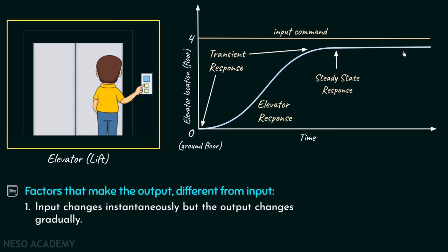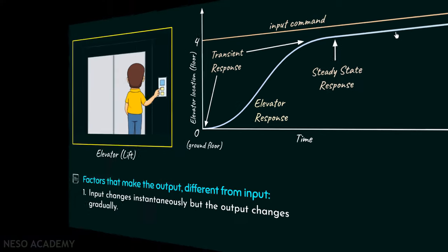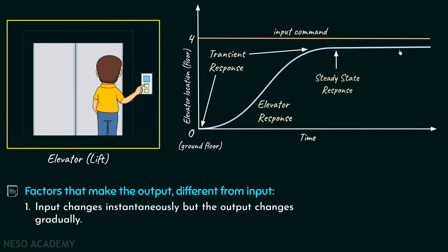The steady state response is when the control system has finally reached the steady state, or the final output has been generated. In this case, the output is the position of the elevator in front of the fourth floor level of the building. So the transient response lasts for a short interval of time, while the steady state response is the permanent response of the system once it has reached the steady state.